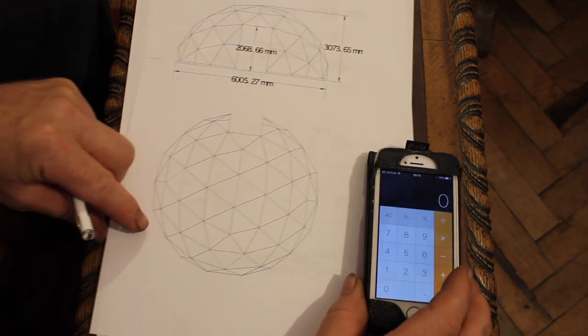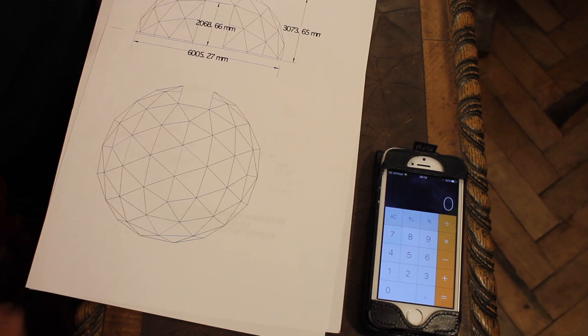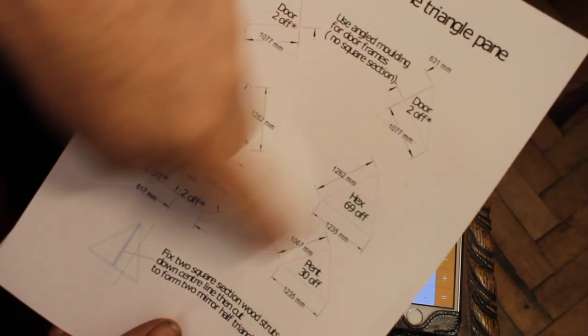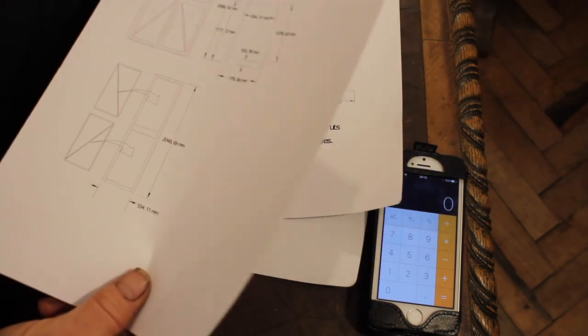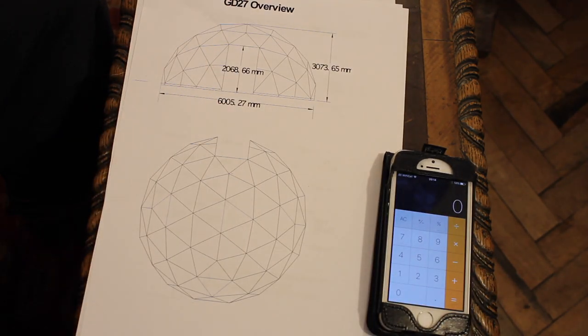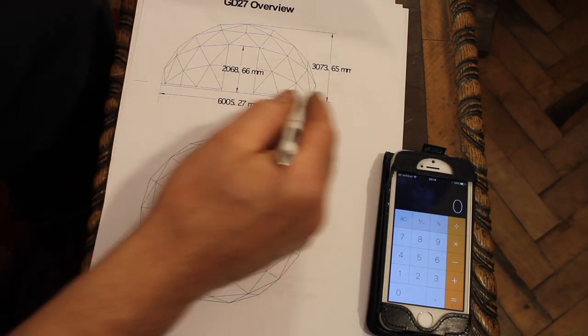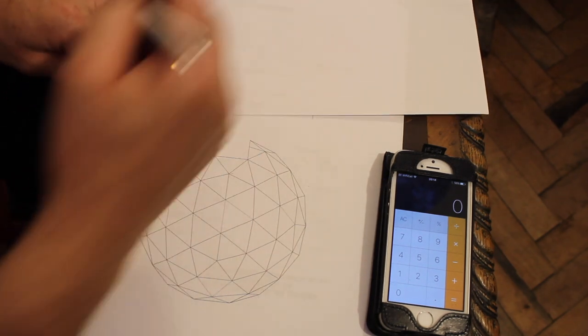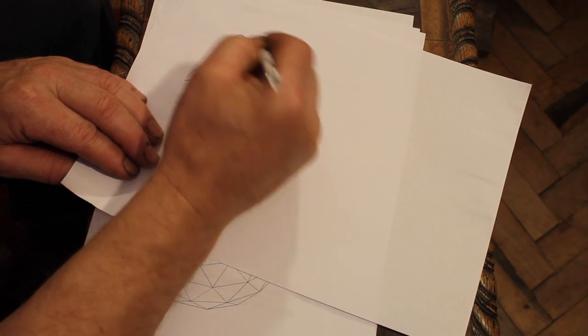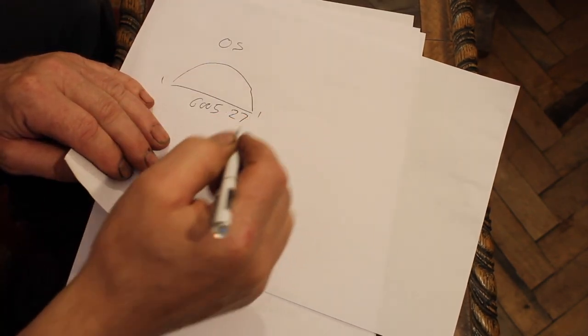Right, what you need is a calculator and set of plans. This is a GD27. We have the overview which shows the overall dimensions, the frame sizes, and the door sizes. Now if you want to change the size of this, what you need to do is get a bit of paper first off. We'll call this our original size, OS measurements, and that's 6005.27, that's the measurement diameter of the dome.